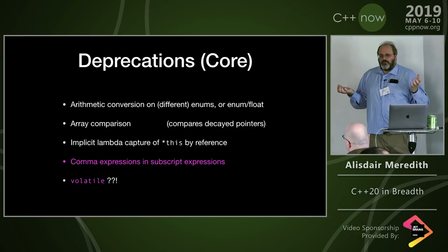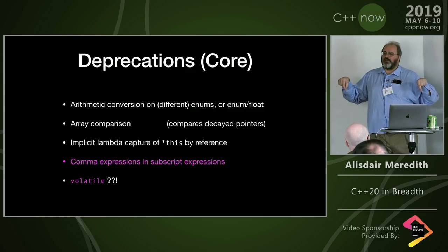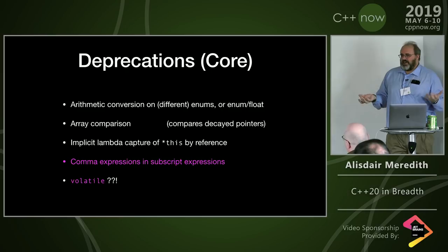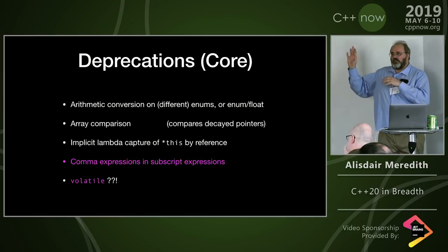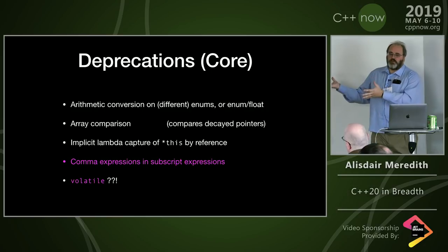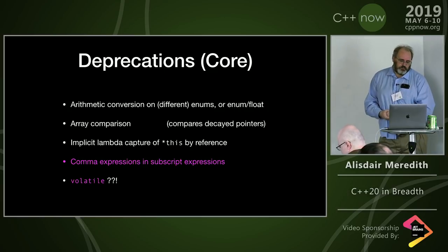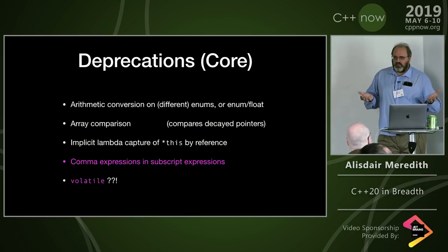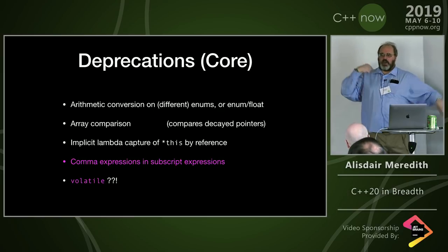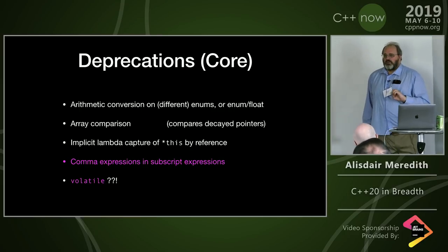Comparing two arrays is now deprecated. What it actually does is decay the arrays to pointers and check if they have the same address — i.e., whether they're literally the same array. It fell out of the grammar and wasn't really what people wanted. As we work on new comparison features, we're disallowing this for the new feature and deprecating it, so compilers will warn 'are you really sure this is what you wanted?'